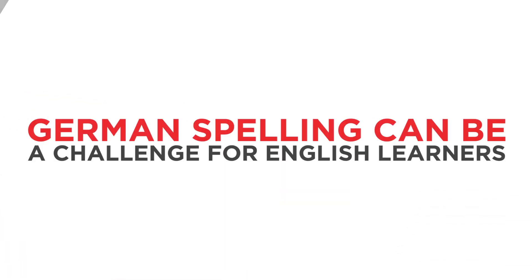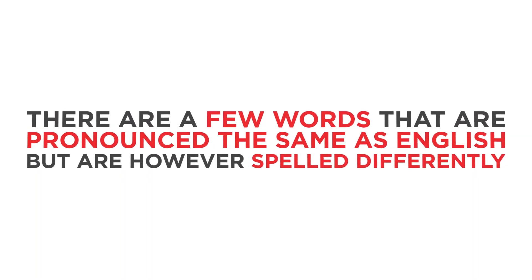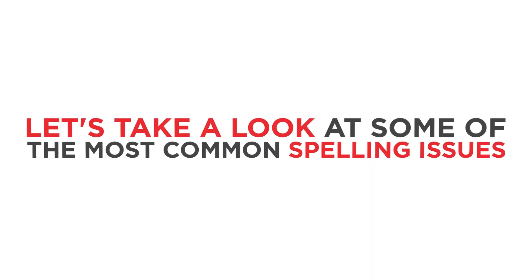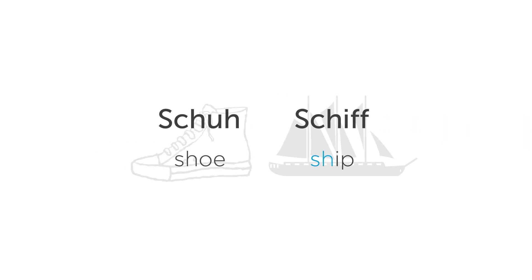Sometimes German spelling can be a challenge for English learners. There are a few words that are pronounced the same as in English but are spelled differently. Let's take a look at some of the most common spelling issues. German uses the same 'Sch' sound as in the English word 'ship.' However, it isn't spelled S-H, but S-C-H in German.